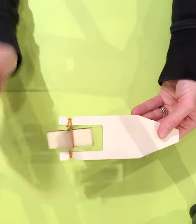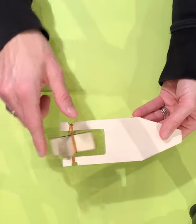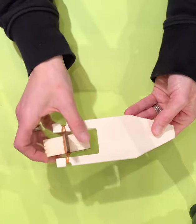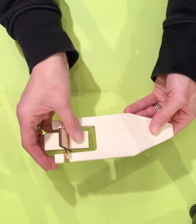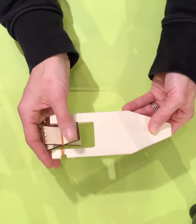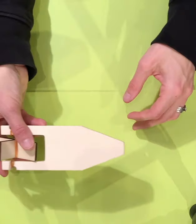The more you wind it, the more energy you're storing inside that rubber band. When it unwinds, the paddle wheel rotates, and the paddles will move the water and propel your boat forward.